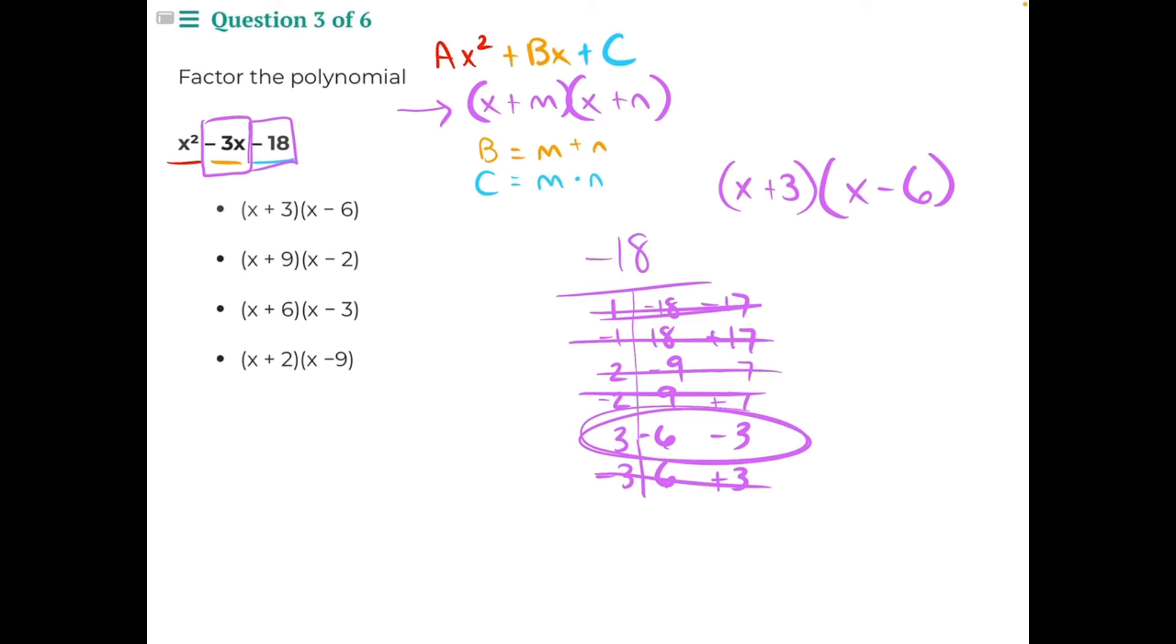And we will use distributive property and the FOIL method in order to double check our answer. If we start with the front, x times x will give us x squared. Then we move on to the outer numbers, x times negative 6 would give us negative 6x. Then the inner side, positive 3 times x would give us positive 3x.